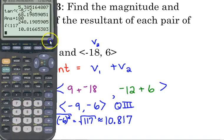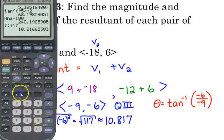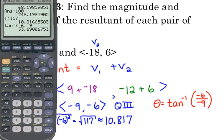And that's the magnitude of the resultant vector. We also need the direction, so theta is equal to the inverse tangent of the y over the x. So that says theta is 33.69 degrees.